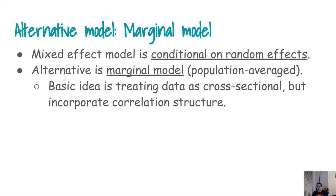In this section we are going to talk about an alternative to the mixed effect model — basically a marginal model. The mixed effect models discussed in earlier videos were conditional models, conditioned on the random effects. A marginal model is generally a population-level model, and the basic idea is that we treat the data as if it is cross-sectional, with no longitudinal aspect, but we incorporate an assumed correlation structure.